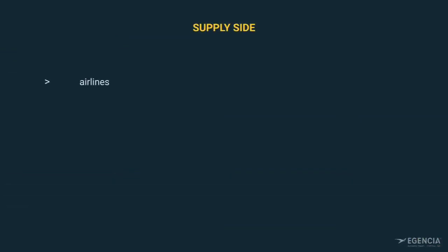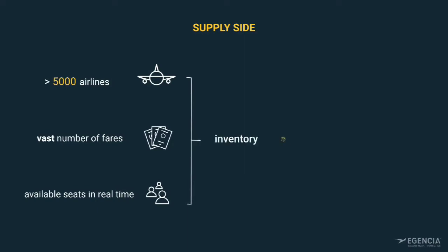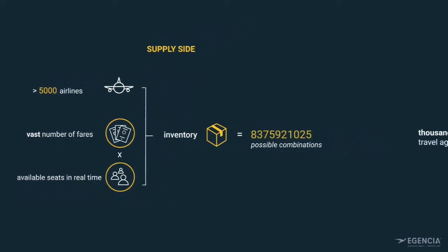On the supply side, there are thousands of airlines in the world. Each of these airlines has a vast number of fares that are managed dynamically. They also manage their available seats in real time — this is called inventory. When you consider the number of fares multiplied by the number of seats, the possible combinations is exponentially large.